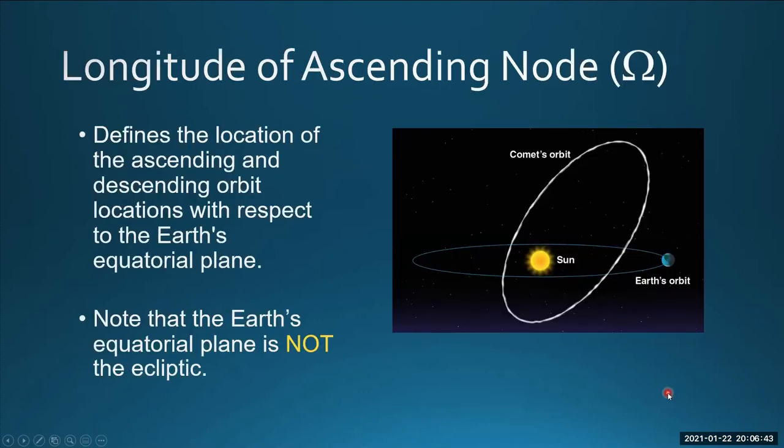The longitude of the ascending node actually makes a little bit of sense to me. It's the location along the orbit where the orbit crosses the Earth's ecliptical plane, or equatorial plane rather. There's an ascending node, where the object goes above the Earth's orbit, and a descending node, which describes where it goes beneath.